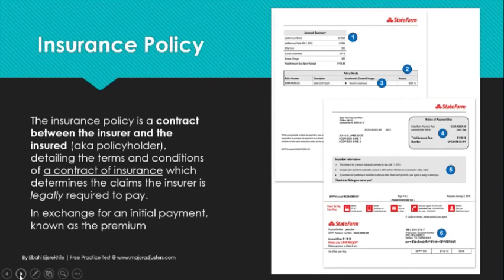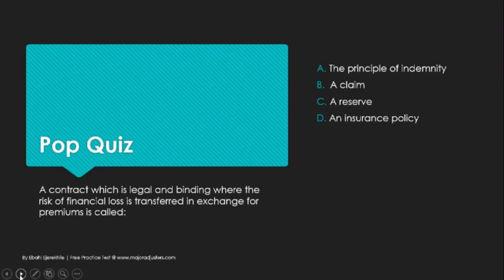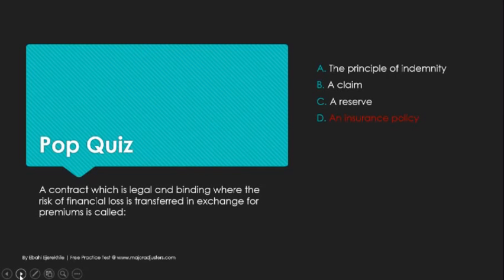You have to give that payment up front to be able to have coverage. Pop quiz: a contract which is legal and binding where the risk of financial loss is transferred in exchange for premiums is called an insurance policy. The contract — the insurance policy — is a contract between the insured and the insurer.